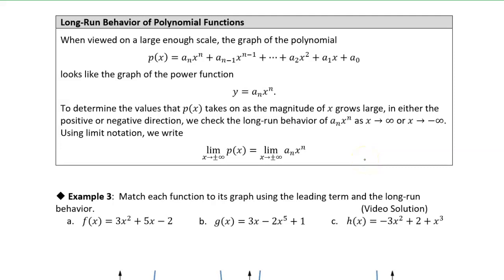Let's look at the long run behavior of a polynomial. Remember when we talked about dominance? We said that higher powers of x dominate any lower powers of x in the long run. That concept comes into play here because when we have a polynomial, the term with the highest power of x dominates all of the other terms with lower powers of x.